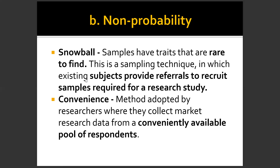Convenience sampling is adopted by researchers where they collect market research data from a conveniently available pool of respondents. For example, if the researcher conducts a survey for all users of a telephone, those who do not have a telephone will not participate. There is a lack of generalization because the insights of those without phones will not be gathered. The participants will only be those who have phones — that is convenience sampling.